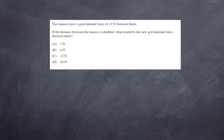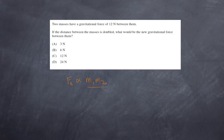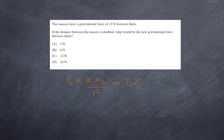Question two: two masses have a gravitational force of 12 newtons between them. If the distance between the masses is doubled, what would be the new gravitational force? The gravitational force is proportional to the product of the masses and inversely proportional to the distance between those masses squared. Since the force is proportional, the ratio of force to mass product divided by distance squared gives us our gravitational constant.